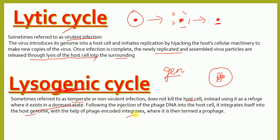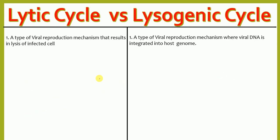The viral DNA gets integrated into the host genome with the help of phage-encoded integrases — enzymes that help in the integration — where it is then termed a prophage. So in the lytic life cycle, lysis of the cell occurs and viral particles are released. In the lysogenic life cycle, the viral genetic material gets integrated into the host cell.